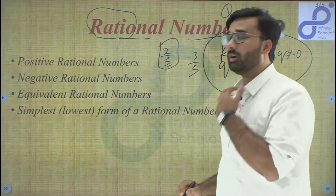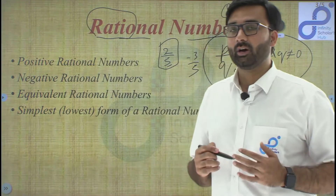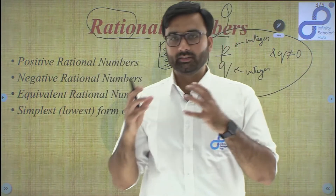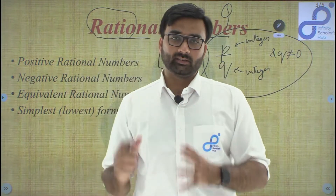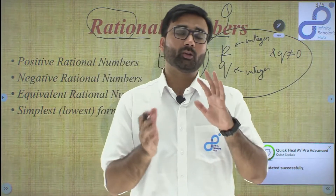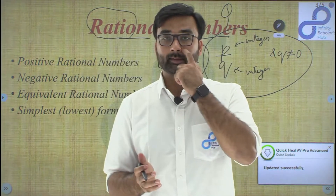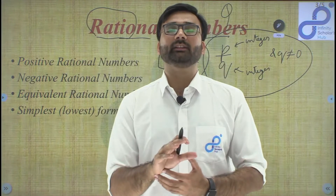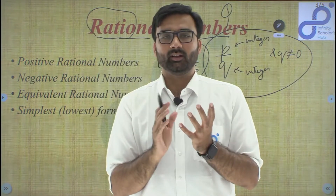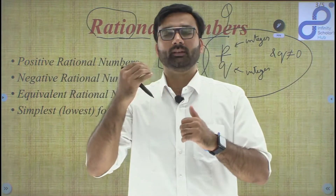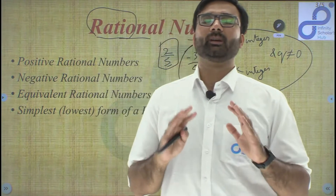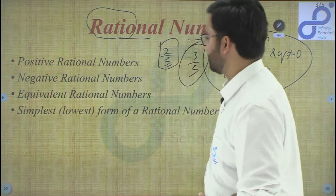Another example: minus three upon five — minus three is an integer, five is an integer, denominator is not zero, so it is a rational number. You should know that all integers are rational numbers, all whole numbers are rational numbers, all fractions are rational numbers, all decimals are rational numbers, and all negative numbers are rational numbers. However, the converse is not true — not all rational numbers are integers or fractions.